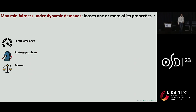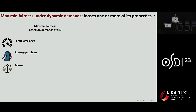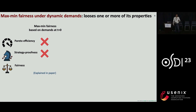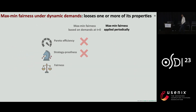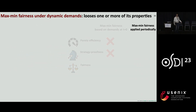When thinking about dynamic demands, there's the question of how to even apply maximum fairness. One way is to simply apply it once based on user demands at time t=0, but this is obviously a terrible idea and satisfies neither strategy-proofness nor Pareto efficiency. The more interesting and typical case used in practice is when maximum fairness is applied periodically over time as user demands change. Let's consider a running example I'll use throughout the talk.